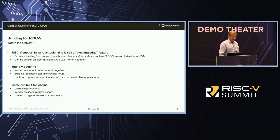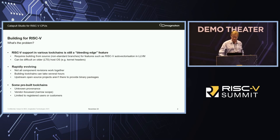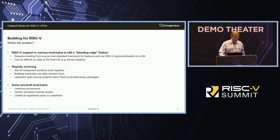Building for RISC-V — what is the problem at the moment? Essentially, RISC-V support in the various toolchains is still very much a bleeding-edge feature. Particularly if you want something like a recent feature enhancement, such as the auto-vectorization support from the LLVM compiler, you'll often find yourself reaching for a source tree and trying to build it from scratch. That can be difficult, particularly if your host OS is a bit long in the tooth.